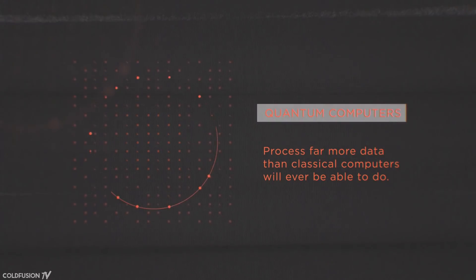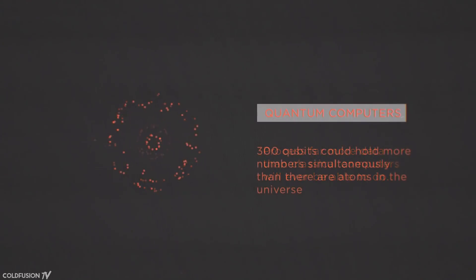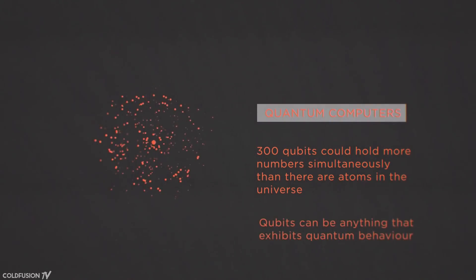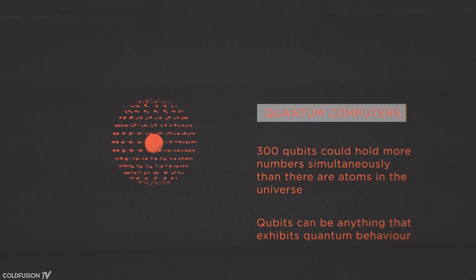If a quantum computer had 100 qubits, it would be more powerful for some applications than all of the supercomputers on Earth combined. 300 qubits could hold more numbers simultaneously than there are atoms in the universe. So what could a billion qubits do?